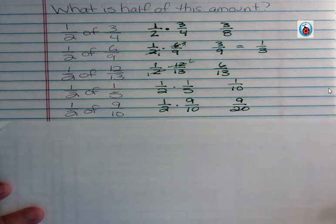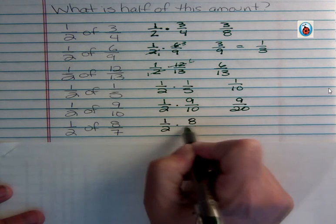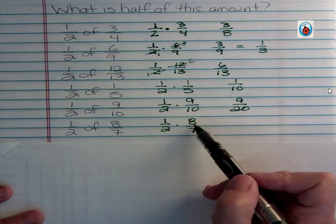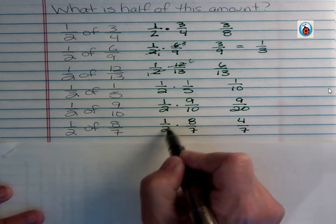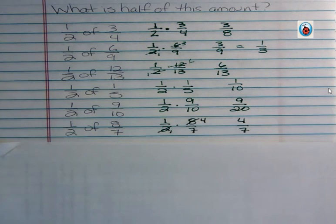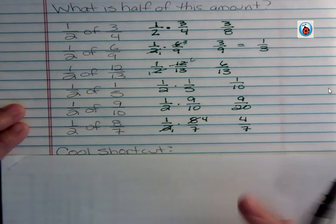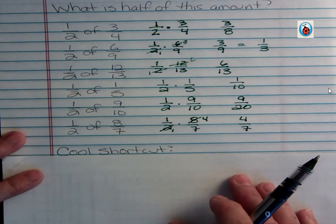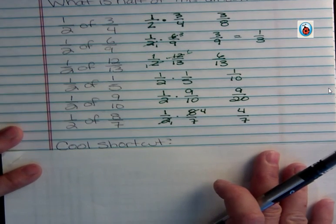What about half of eight-sevenths? Well we can cut that eight in half. If we cut the eight in half we get four-sevenths because two goes into itself once and goes into eight four times. Half of eight is four. When the number on top is even it's easy, we're just cutting that in half. When the number on top is odd we're just doubling the bottom. That's cutting something in half. This is the procedure you're going to follow and this is the cool shortcut that we just saw.